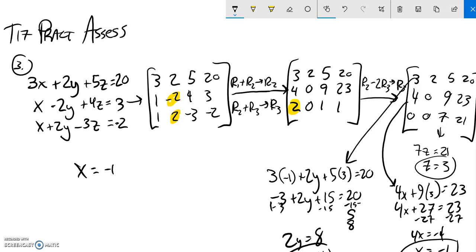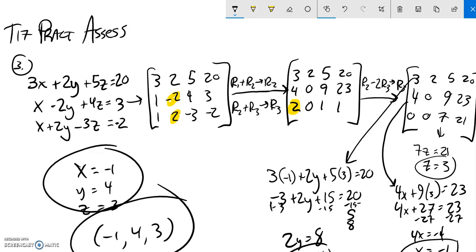I can write it as X is negative one, Y is four, and Z is three. Or I can write it as the ordered triplet (X, Y, Z). Either of these are great answers to that question.